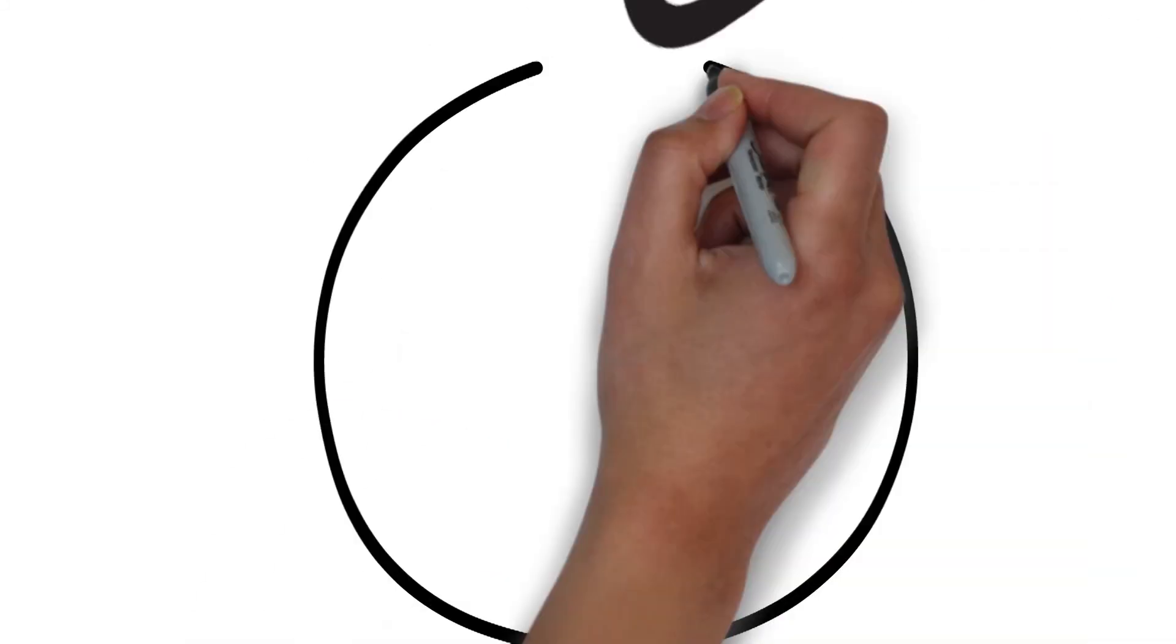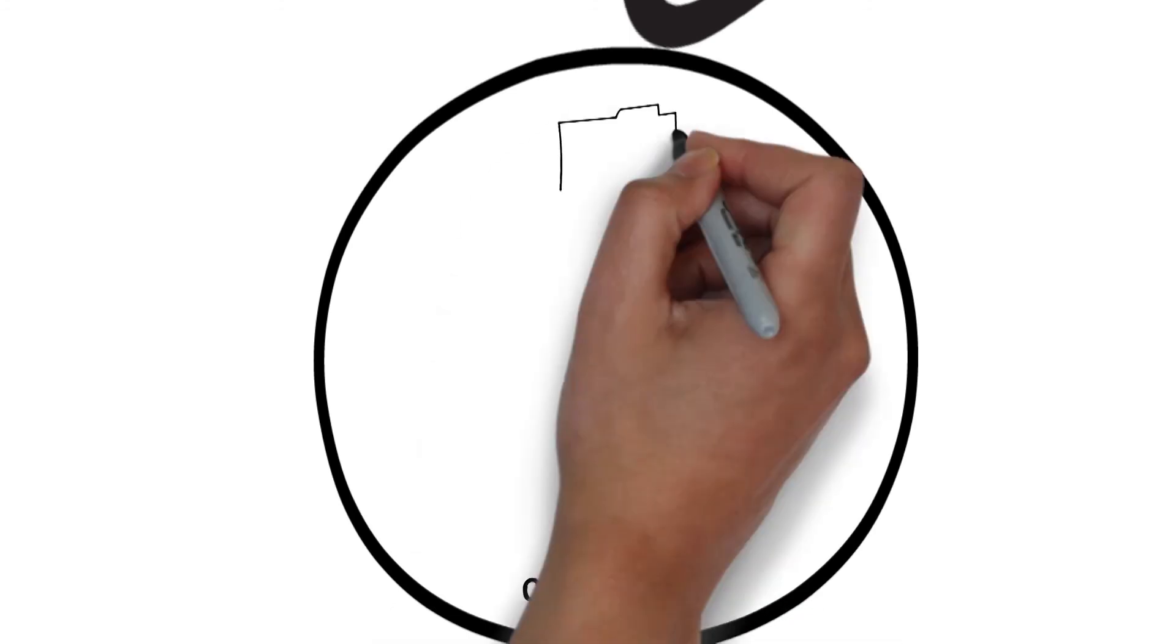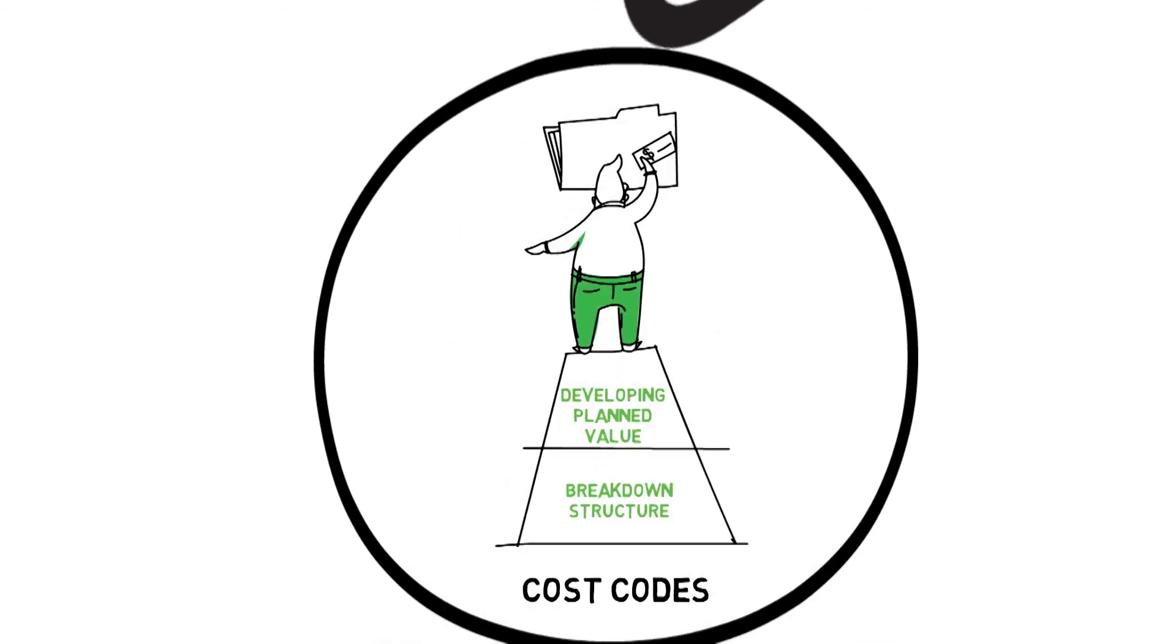With the foundation of the work breakdown structure and the process for developing planned value in place, the project controls team can now develop cost codes that capture earned value and roll-up to track cost performance at a CWP level.